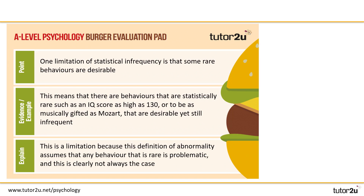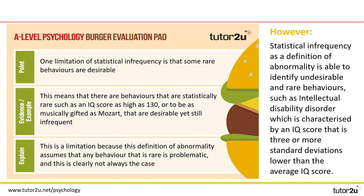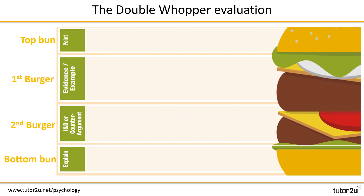Here's our completed burger template from earlier, and hopefully you were able to come up with some type of counter. My example on the board discusses that statistical infrequency as a definition of abnormality is able to identify undesirable and rare behaviors such as intellectual disability disorder, which is characterized by an IQ score that is three or more standard deviations lower than the average IQ score. This is my counter-criticism because even though the paragraph started off talking about how it's a limitation that some rare behaviors are counted as desirable, my counter-argument is saying that despite that, there is still some really good use of this tool.